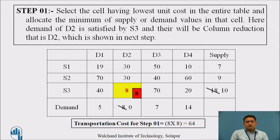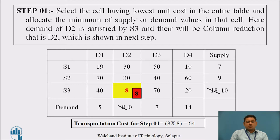The demand of D2 is 8 and the availability at source S3 is 18. Destination D2 is fully satisfied from source S3 with an allocation of 8 units. Since D2 is satisfied, there is a column reduction of D2, which can be seen in the next step.